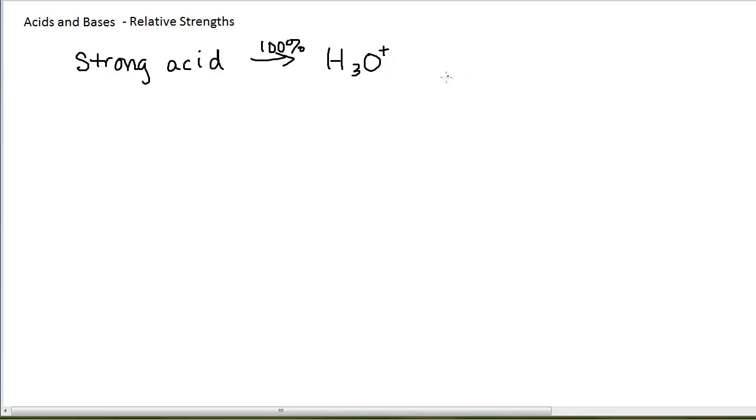There will also be whatever anion is present based on the strong acid formula. But H3O+ is the product when you have a strong acid, and for that reason, we consider H3O+ to be the strongest acid possible, because any strong acid is going to essentially revert to H3O+ in an aqueous solution.